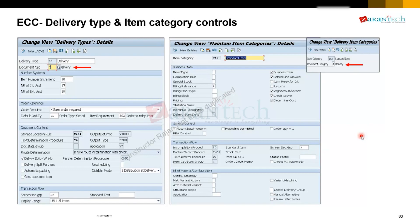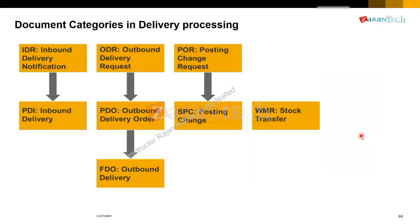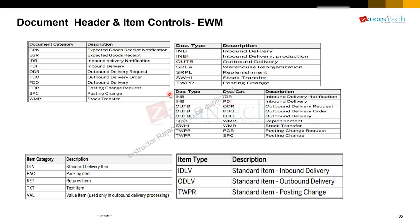The document category — wherever it says 'category' — you will not modify, because SAP programming logic is written based on the categories. This is not an EWM thing; this is ECC SD. In EWM we don't care about notifications, ODR, or request — we are connecting to SAP core or working on S/4 implementations. We are left with only five document categories: PDI for inbound, PDO for outbound, SPC for posting change, WMR for stock transfer, and FDO for the final delivery. In any implementation, we don't use standard document types INB or OUTB — we make ZANB, ZNB, or ZOTB.